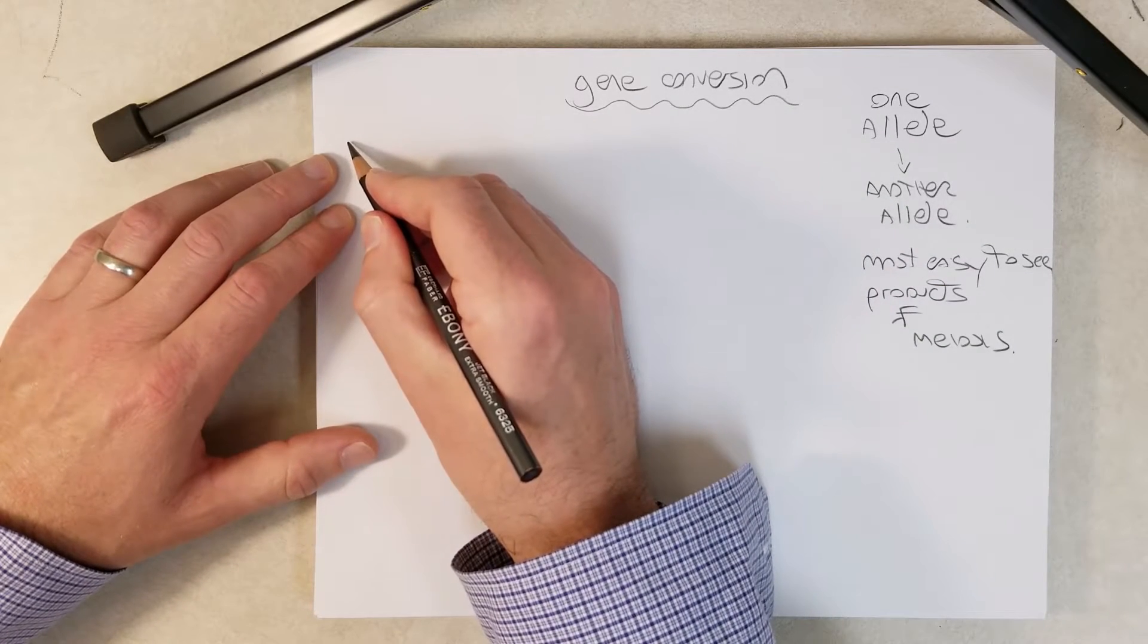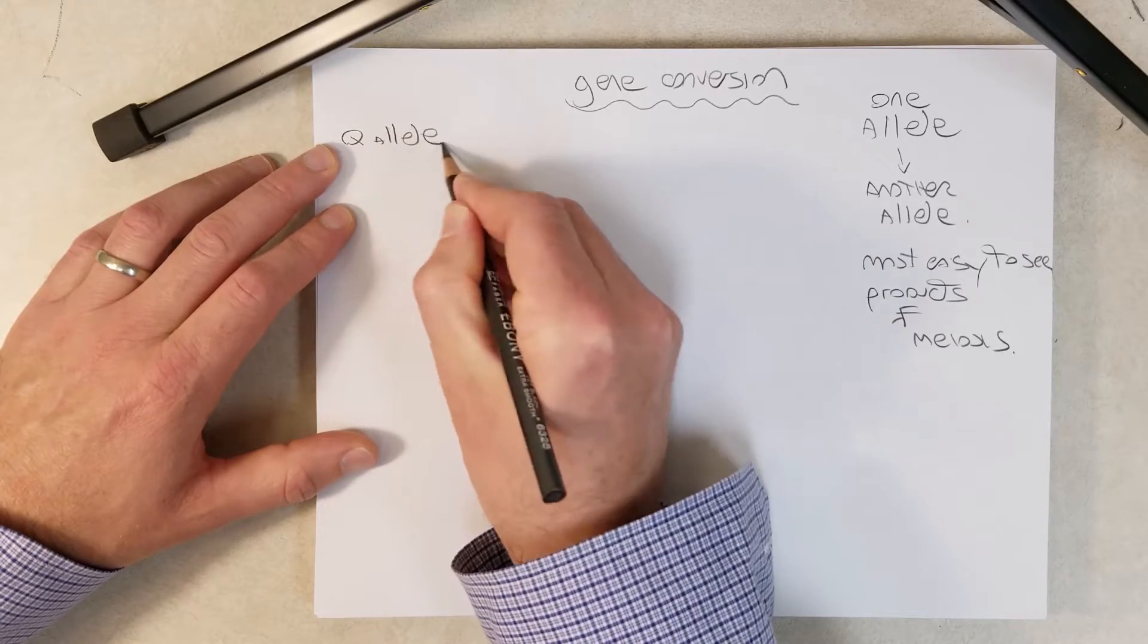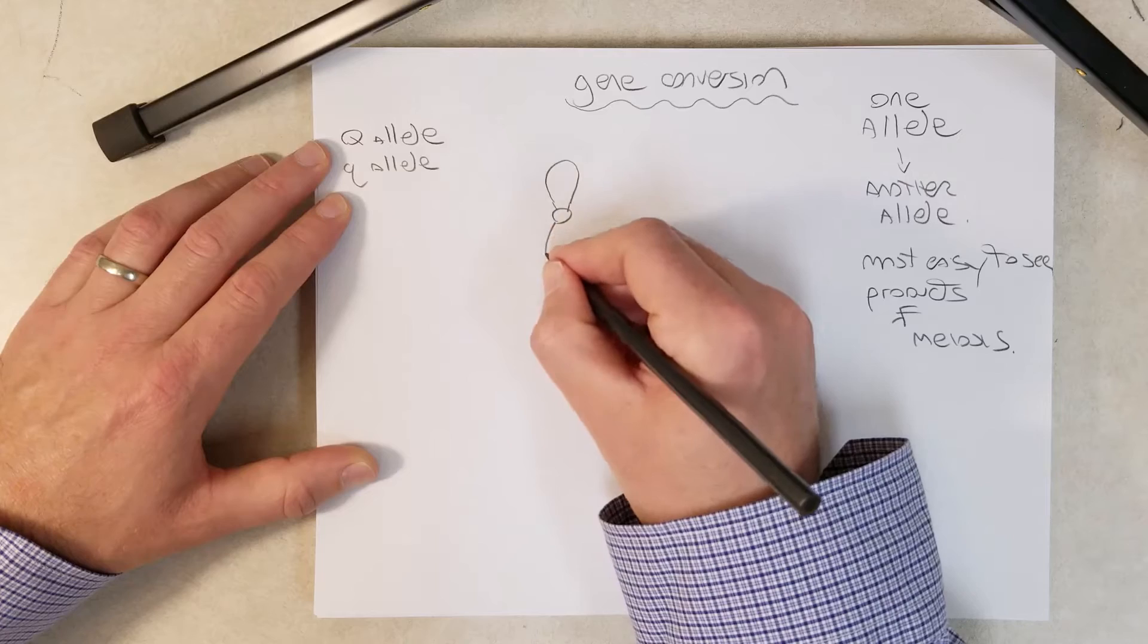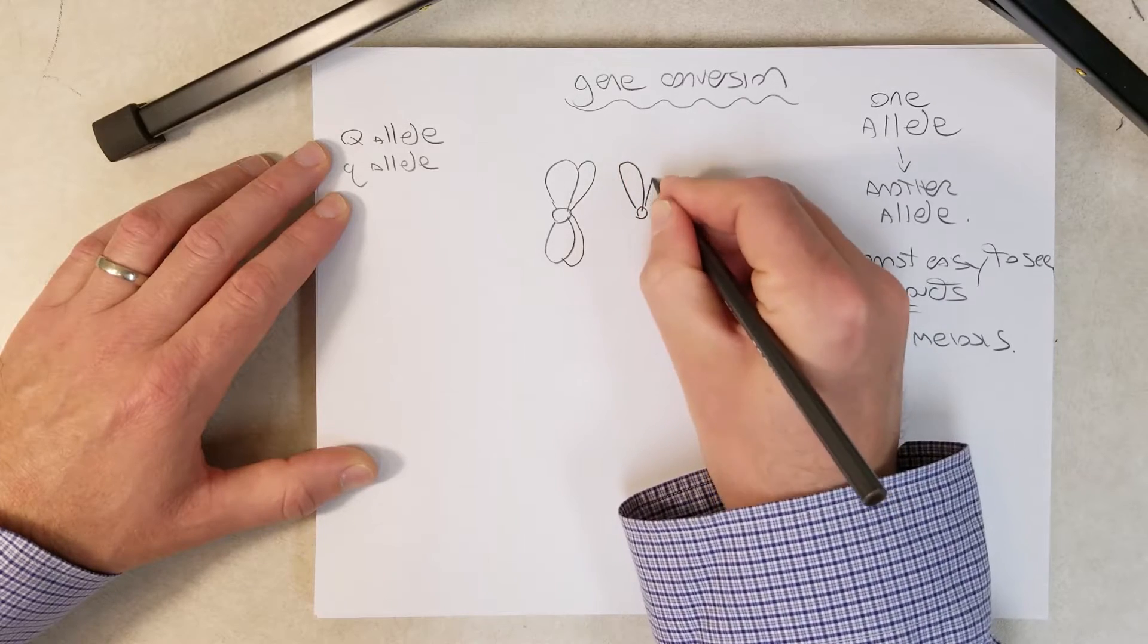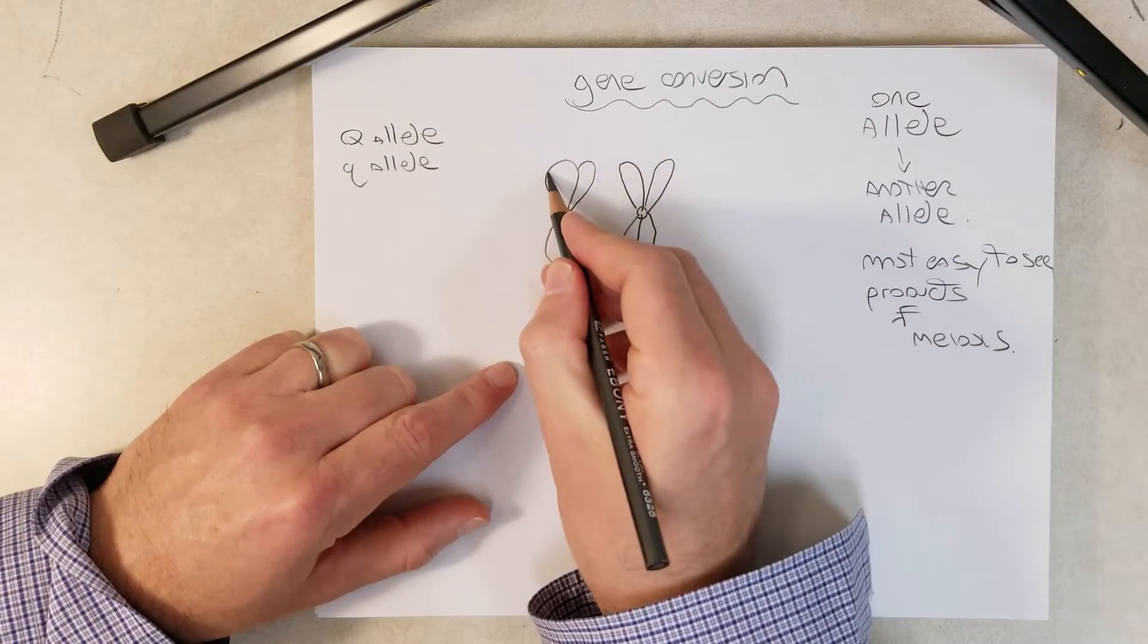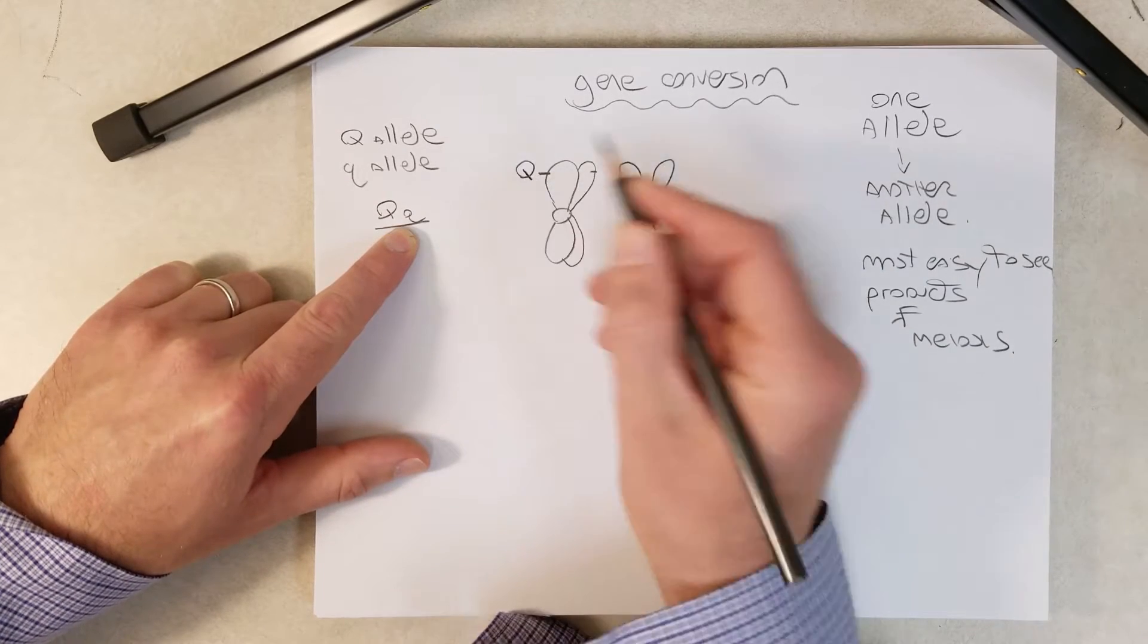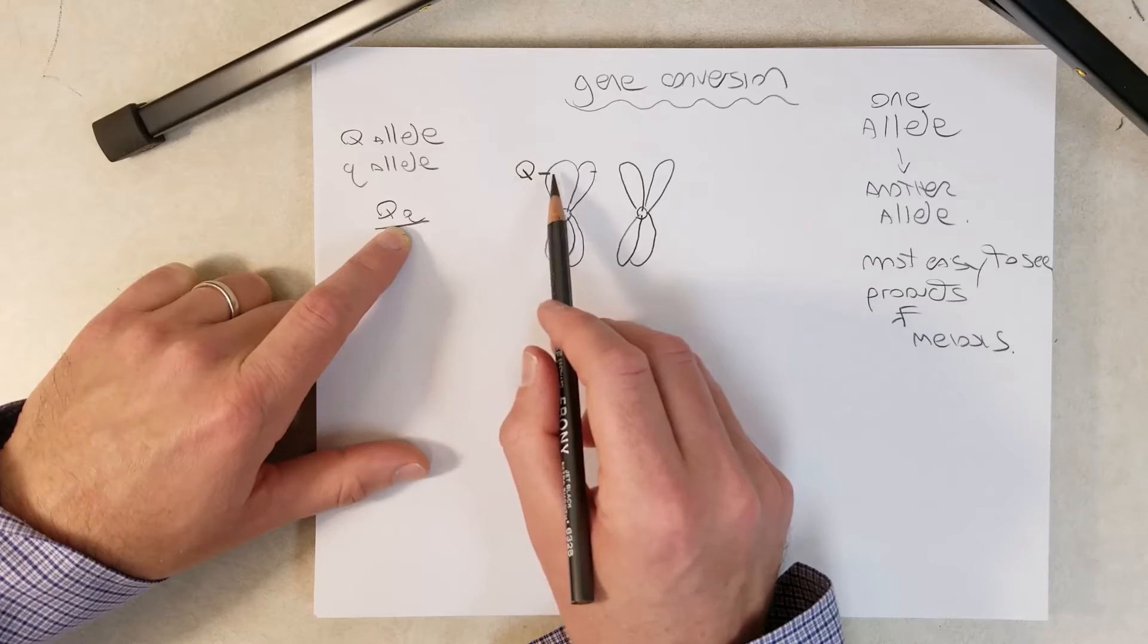So well let's take a hypothetical gene with a gene called Q, and there is a big Q allele and a small Q allele. And we'll take a single individual, and let's look at this gene during meiosis. And let's say this individual is heterozygous.